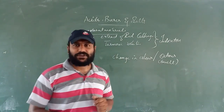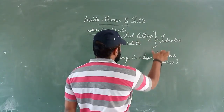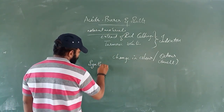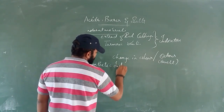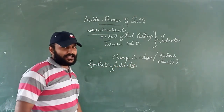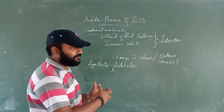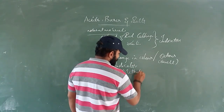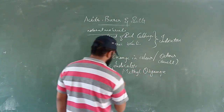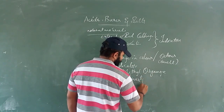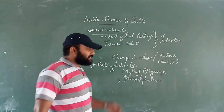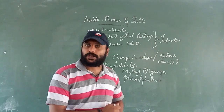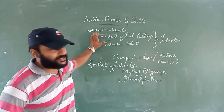There are three types of indicators: natural indicators, synthetic indicators, and olfactory indicators. Natural indicators include things like extract of red cabbage. Synthetic indicators are obtained from the laboratory, such as methyl orange.